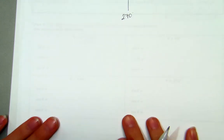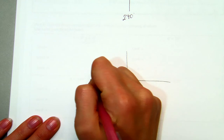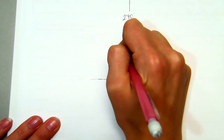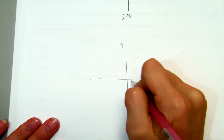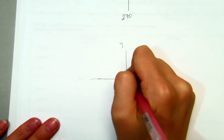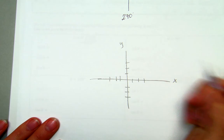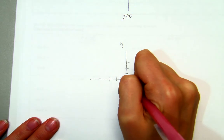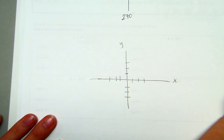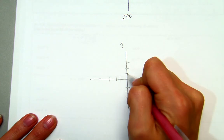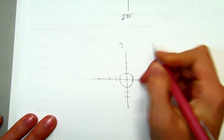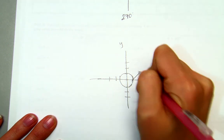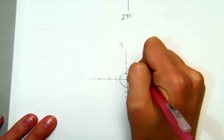I'm going to draw an x and y coordinate plane — three units over, three units up, three units to the left, and three units down. Now, if from the center of the origin I draw a circle that goes through those points, these particular points on the axes are easy to find because they lie directly on your coordinate axes.